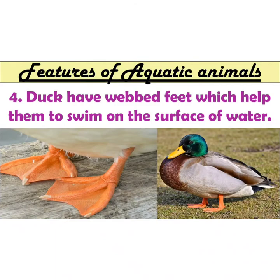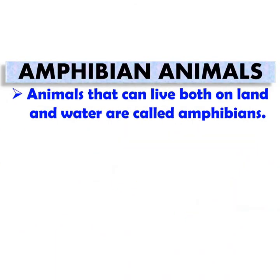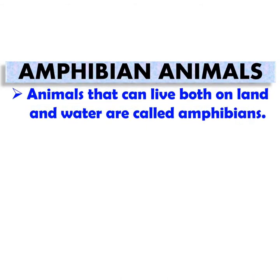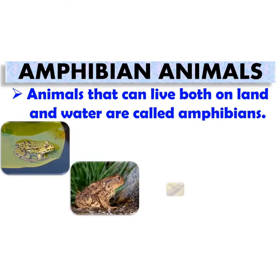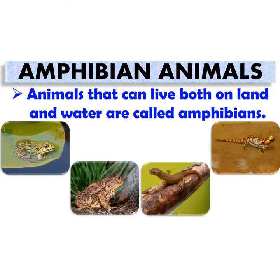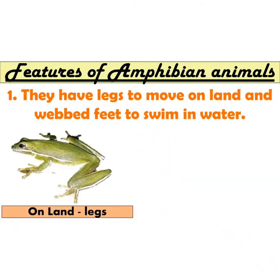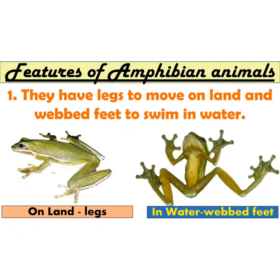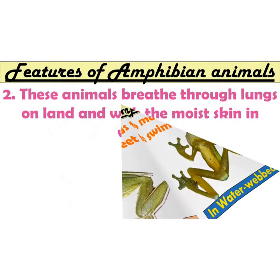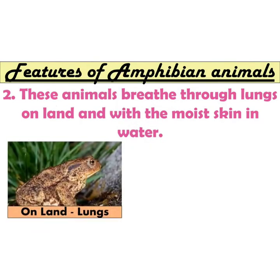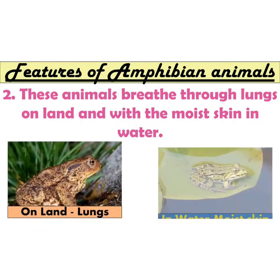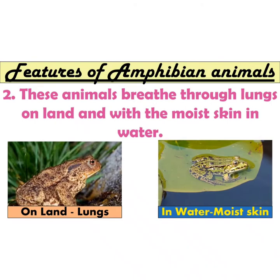Amphibians: animals that can live both on land and in water are called amphibians. Frogs, toads, newts, and salamanders are some examples of amphibians. They have legs to move on land and webbed feet to swim in water. These animals breathe through lungs on land and with their moist skin in water.